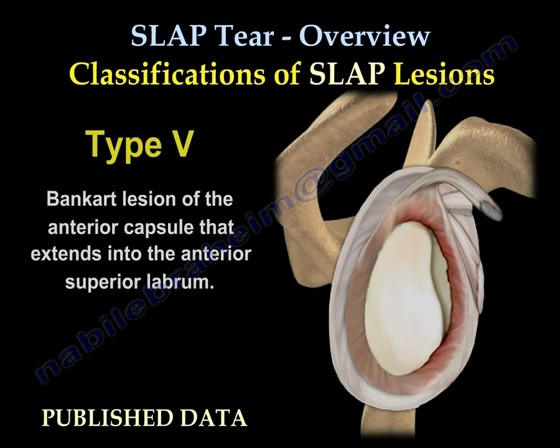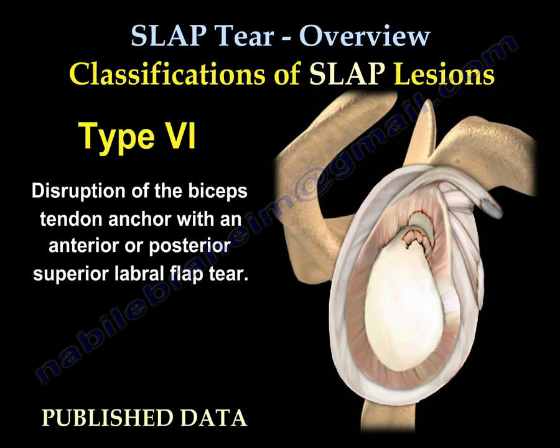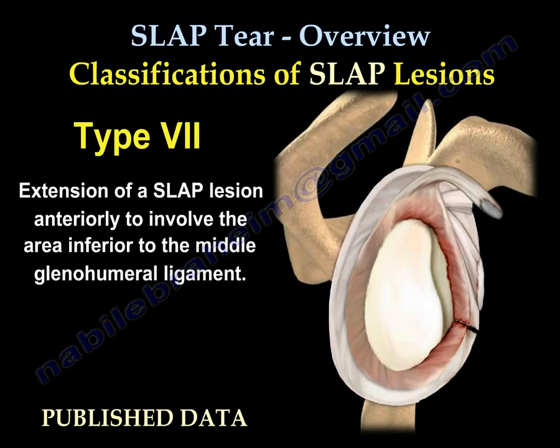Type 5 is a Bankart lesion of the inferior capsule that extends into the inferior superior labrum. Type 6 is the disruption of the biceps tendon anchor with an anterior or posterior superior labral flap tear. Type 7 is an extension of a SLAP lesion anteriorly to involve the area inferior to the middle glenohumeral ligament.